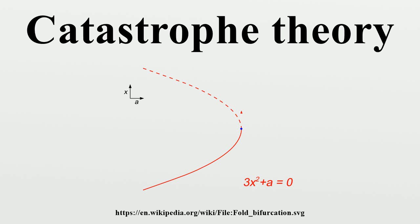However, examined in a larger parameter space, catastrophe theory reveals that such bifurcation points tend to occur as part of well-defined qualitative geometrical structures.